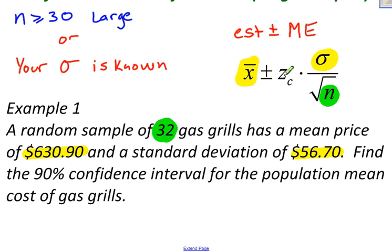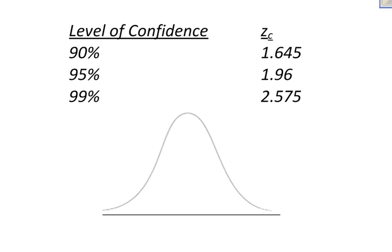Now, the last thing I need is this Z. And I don't know what that is yet. But I can get this from the confidence level. See the little subscript C right here? This stands for the confidence level. And in this case, my confidence level is 90%. Well, how do I know what the Z score is for a 90% confidence level? Let me show you a little table here.